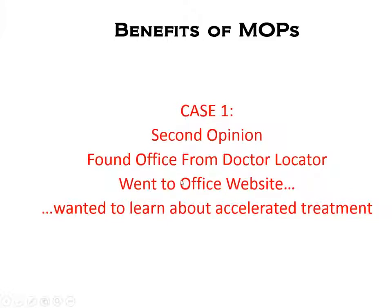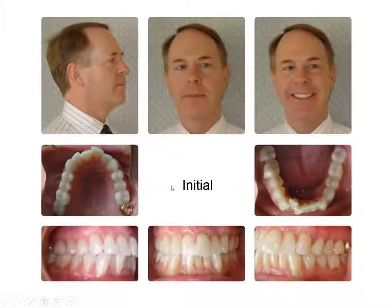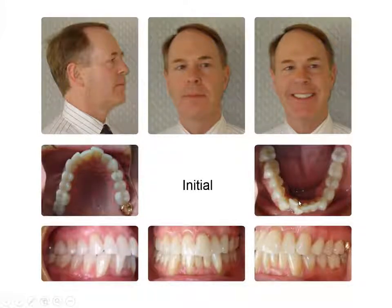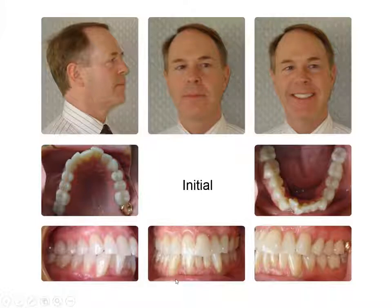Here's a case that came to me as a second opinion — the patient found my name on the Invisalign doctor locator and was curious about Propel. This adult patient David was unhappy with his teeth, didn't want braces, and wanted treatment done faster. I finished in seven and a half months with one refinement, instead of a year to 14 months. He also needed perio work, and my periodontist loves me to align teeth first so grafting heals better.